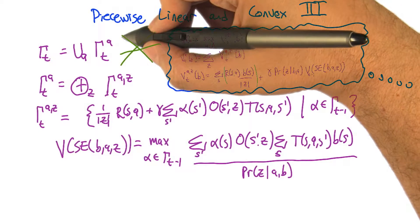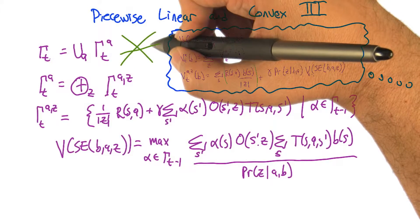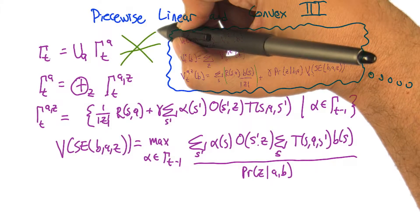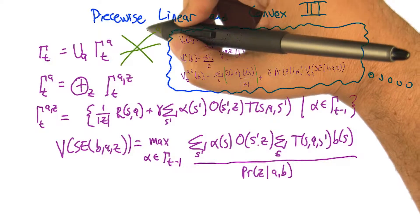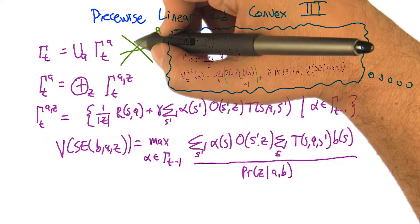So imagine that we've got one set of vectors that represents a value function, and then we have another set of vectors. This is for one particular action. Then we have a set of vectors that represent the value function for a different action, call it a2.